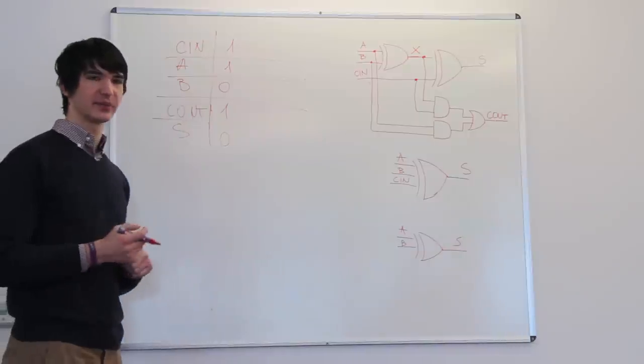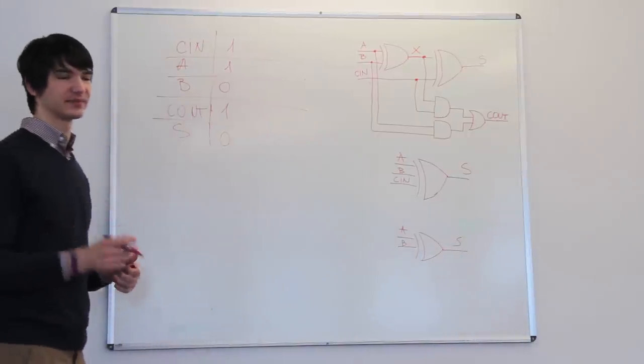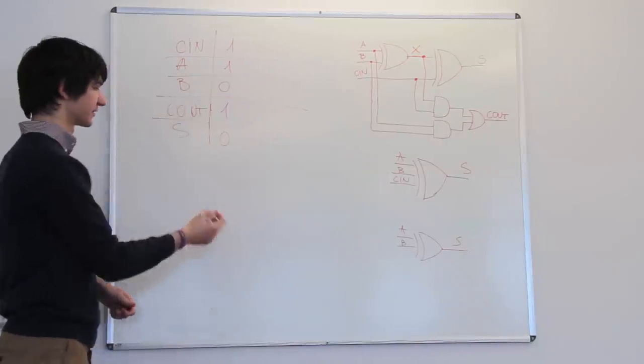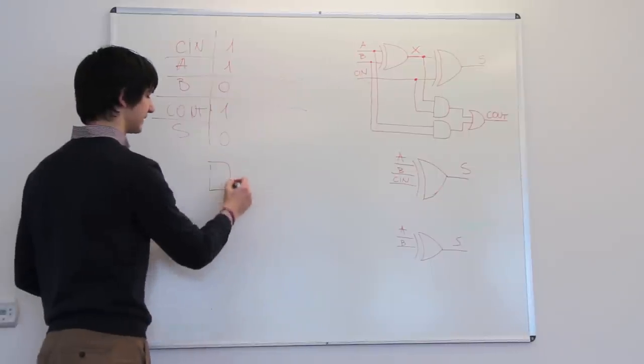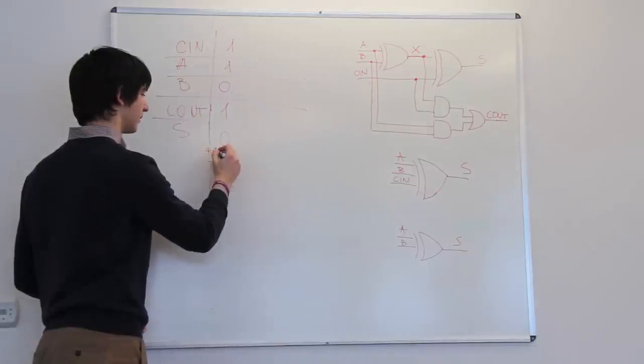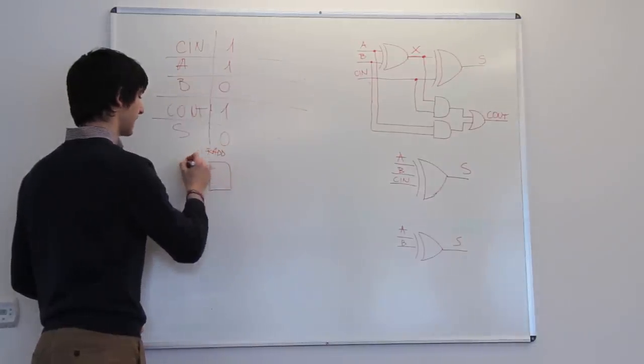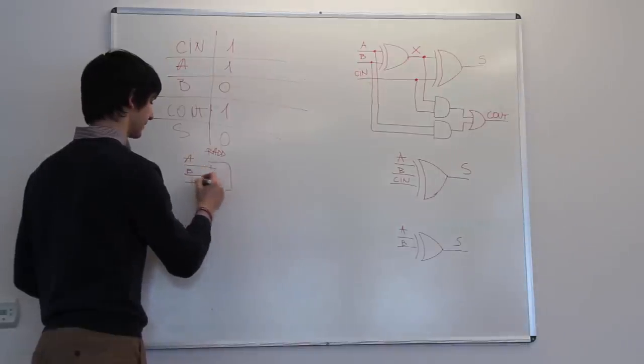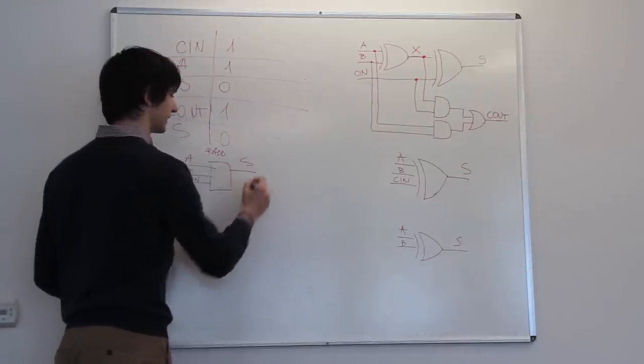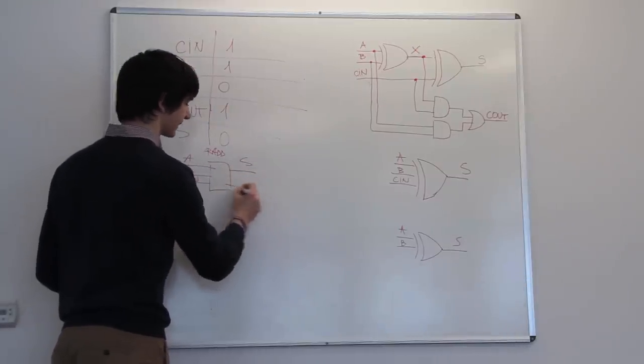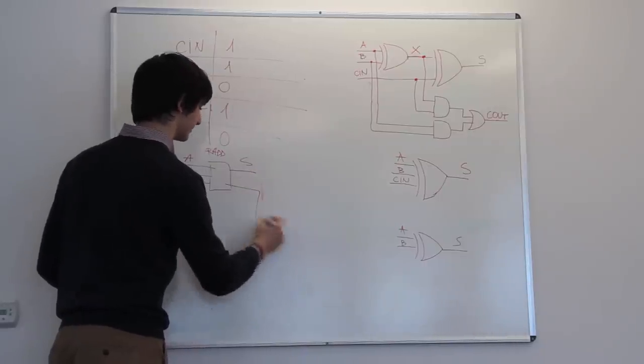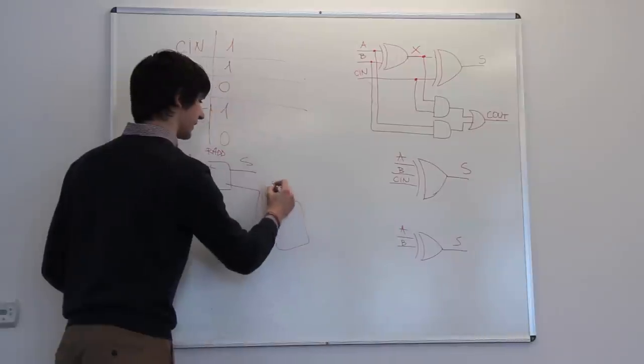So the basic idea of the ripple adder, and the reason why it's called the ripple adder, is that this carry out propagates further and further. So if you have a set up like this, if this is your ripple adder, you would have an a, a b, a cn, and you would get an s, and further a cout, which you could feed in another ripple adder.